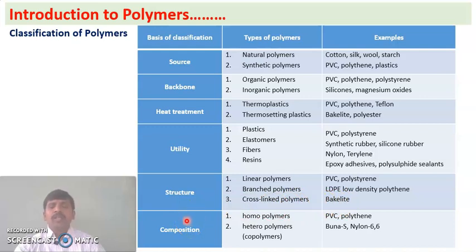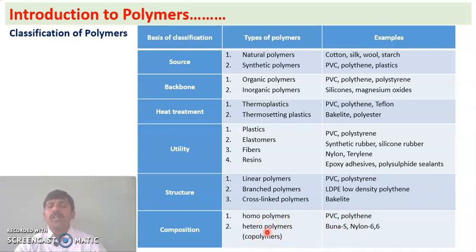The next classification is based on composition. Polymers are classified into two types: homopolymers and copolymers. Homopolymers — examples are polyvinyl chloride and polythene — are formed from only one type of monomer. Copolymers are formed from different monomers. Example: Buna-S rubber, formed from 1,3-butadiene and styrene as two different monomers.